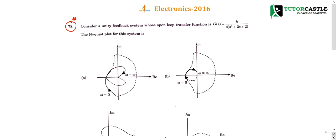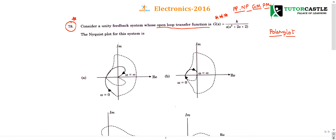Whenever you are doing a Nyquist plot or a polar plot, if you know how to plot a polar plot, Nyquist plot is just one more step ahead. So let us first compute the polar plot. Whenever you are doing a Nyquist plot, polar plot, or calculating gain margin or phase margin, always consider the open loop transfer function, not the closed loop transfer function. This applies to root locus as well.